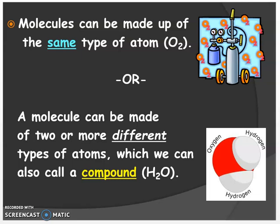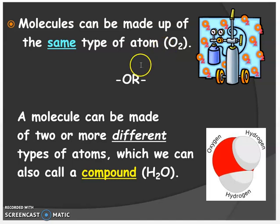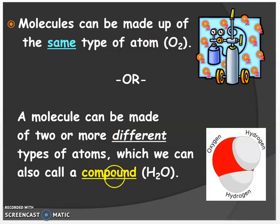Molecules can be made up of the same type of atom — for example, O2. Or they can be made up of two or more different types of atoms, which we can also call a compound. For example, the compound for water is H2O.